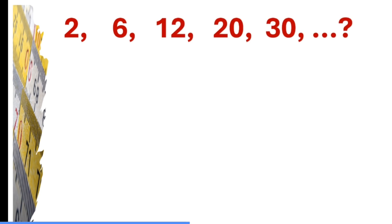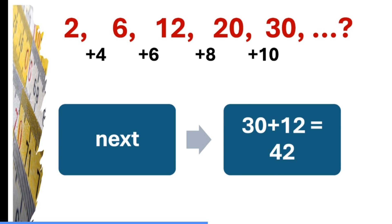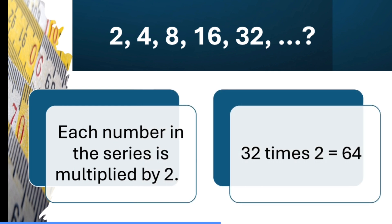You can follow another method as well: 2 and 6, 6 and 12, 12 and 20, 20 and 30 — the difference is increasing by 2: 4, 6, 8, 10. So the next difference must be 12, giving us 42 again. Here the series 2, 4, 8, 16, 32 — every term is multiplied by 2, so 32 multiplied by 2 equals 64.